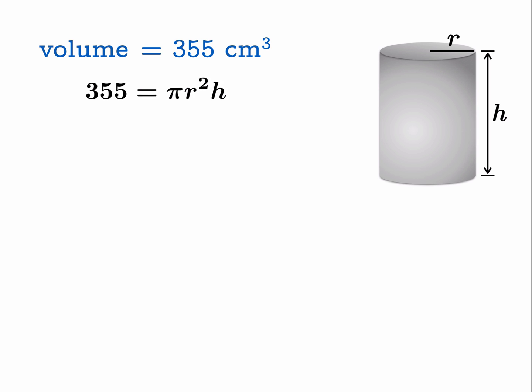Now one of the consequences of this is you can choose one of the variables to be something and then the other one is forced to be a function of it. In this case, the height is going to be 355 divided by pi r squared. Once you choose the radius, the height is a function of radius.